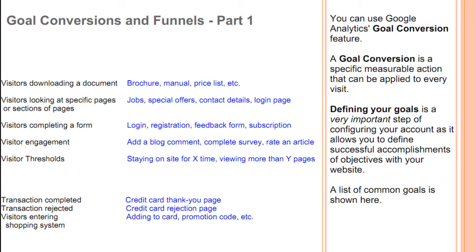A list of common goals is shown here — such things as visitors downloading a document, looking for specific pages, completing a form, thresholds, and on an e-commerce site, transactions completed or rejected.